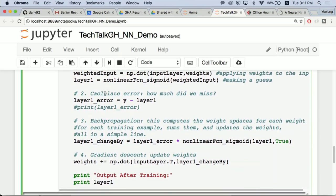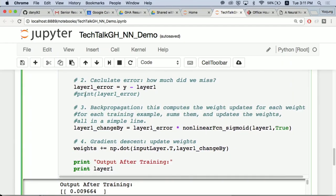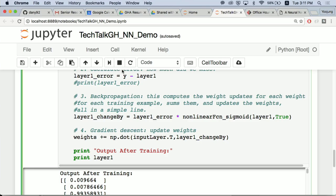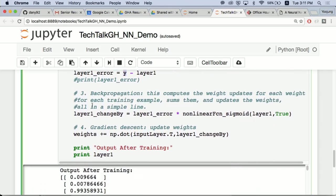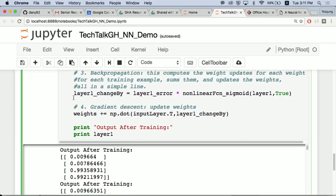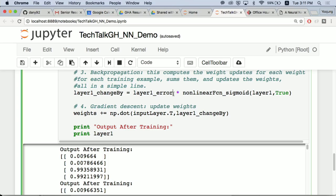We're going to apply the weights on them—think of them as the edges of the synapse passing through. Then layer one is going to perform an activation function on that weighted input. Step two: it's going to calculate an error of how much off it was, where Y is the correct answer and layer one was the guess I made.